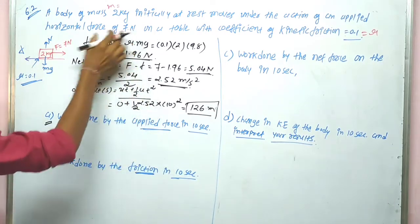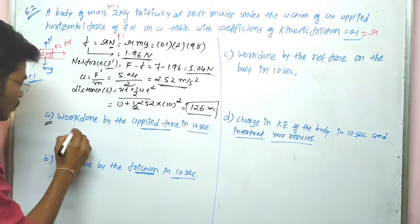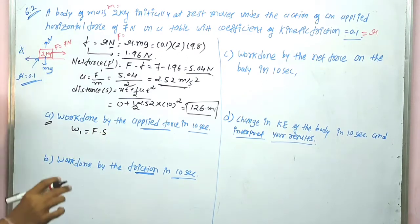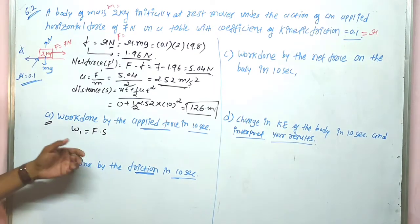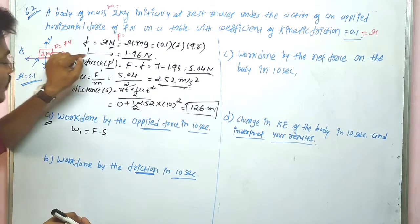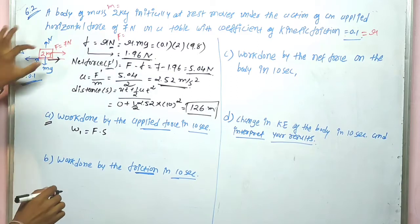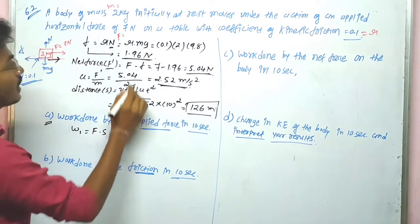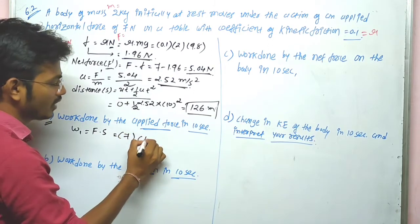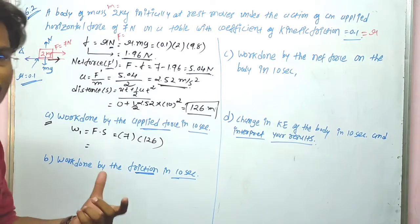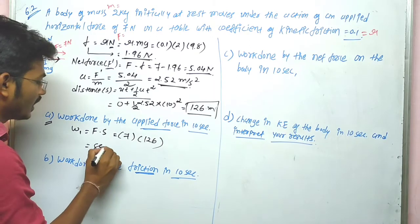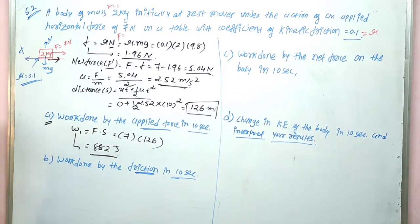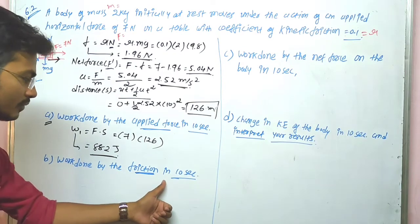Work done by the applied force: W1 = F × s = 7 × 126. Both the applied force and displacement are in the same direction, so work is positive. W1 = 882 J.